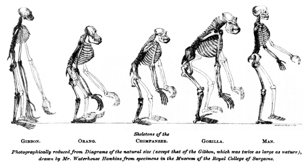Knowledge of spatial variation in the numbers and types of organisms is as vital to us today as it was to our early human ancestors, as we adapt to heterogeneous but geographically predictable environments. Biogeography is an integrative field of inquiry that unites concepts and information from ecology, evolutionary biology, geology, and physical geography. Modern biogeographic research combines information and ideas from many fields, from the physiological and ecological constraints on organismal dispersal to geological and climatological phenomena operating at global spatial scales and evolutionary time frames.